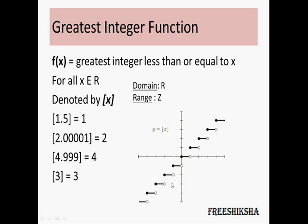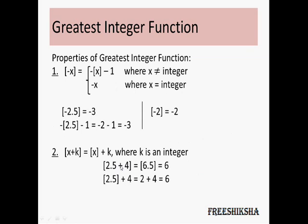This is how the function looks on a graph — for integral values you see a step. For 1, the greatest integer value is 1, and for 1-point-something it remains 1, then at 2 it jumps to the next step and goes to 2. Let's have a look at some of the properties of the greatest integer function.